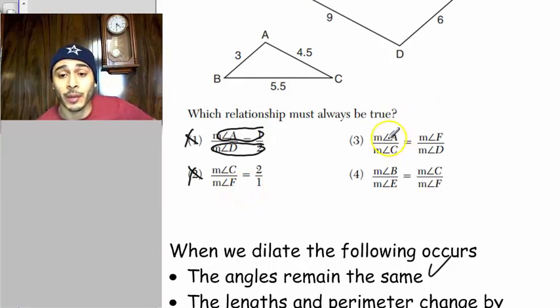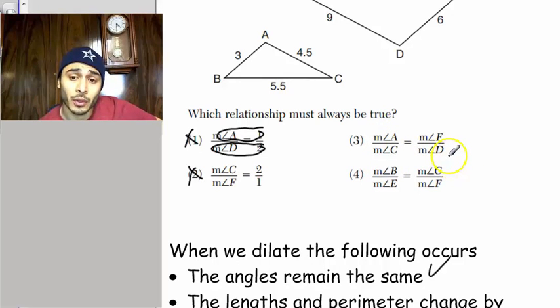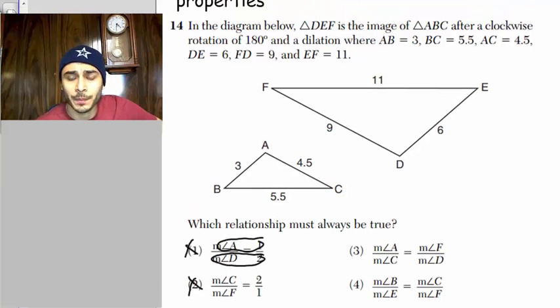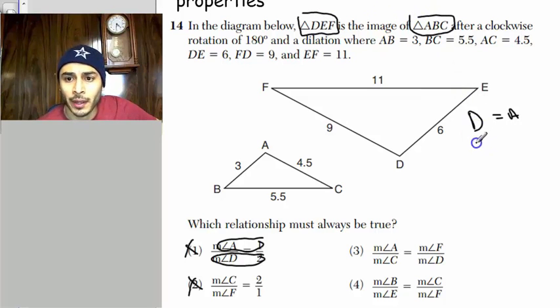So it's not choice 2 for that reason. The angles remain the same. So now we're left with choice 3 and choice 4. So if you look at choice 3 and choice 4, they're set up like in proportions. And as long as we just match the angles how they're supposed to match, we'll be able to see which proportions truly hold. So if you look at the question, you're given triangle DEF and triangle ABC. Angle D corresponds to angle A. Angle E corresponds to angle B. And angle F corresponds to angle C.